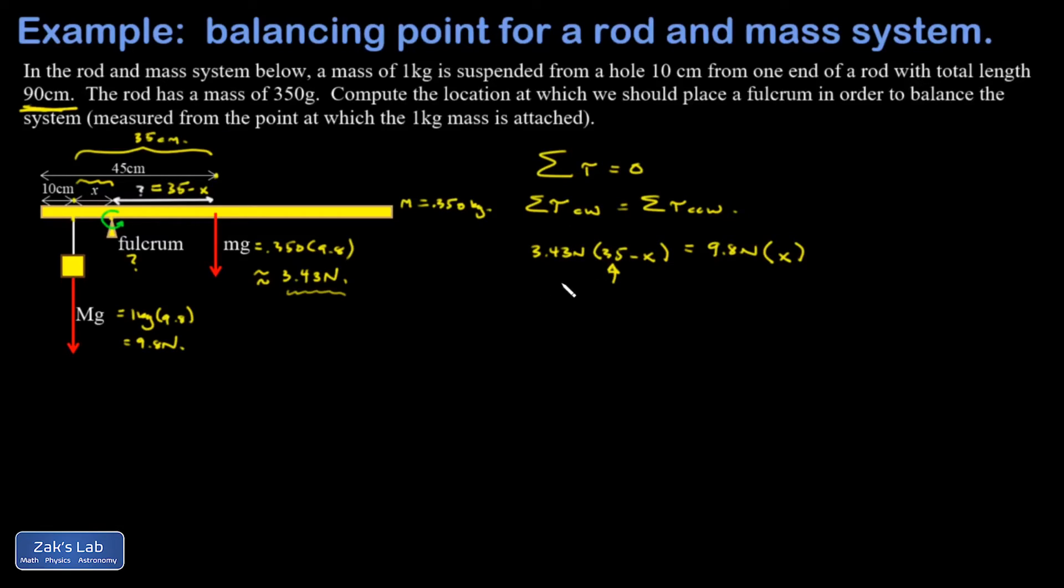So on the left-hand side, I'm going to get 120.1 minus 3.43x is equal to 9.8x. Add the x-containing terms to both sides. I get 120.1 is equal to 13.23x. And then finally, I divide by that coefficient and get x is equal to 9.1 centimeters. So if you set up that fulcrum 9.1 centimeters past the location where the heavy mass is tied on, you can set this system down and it will just balance and just stay there.